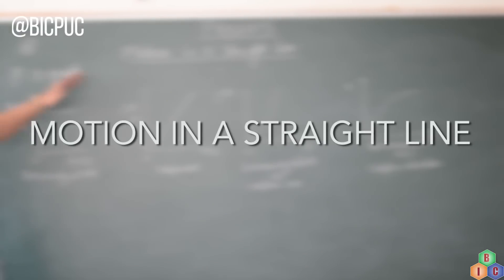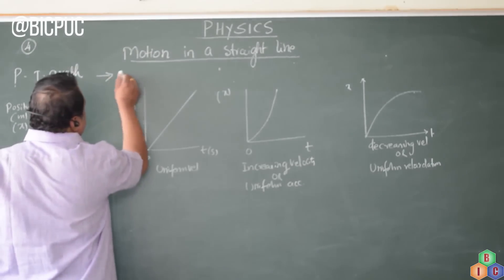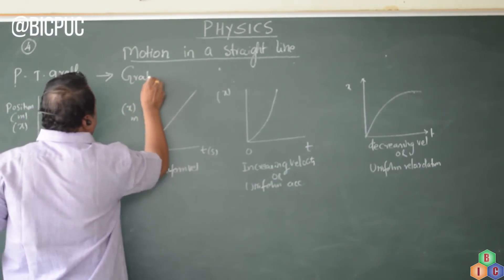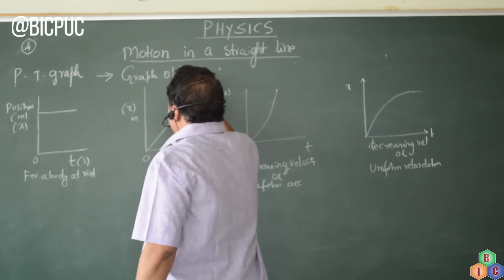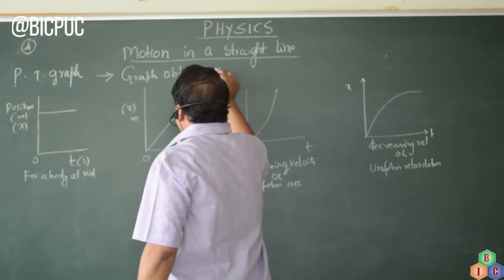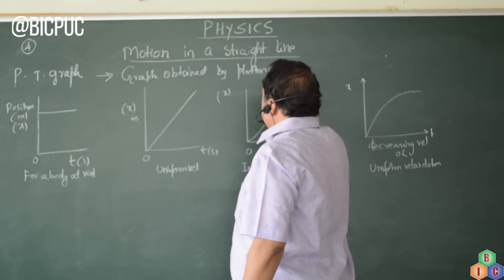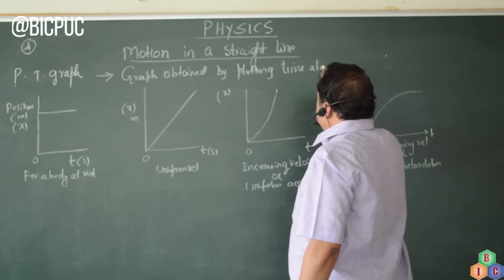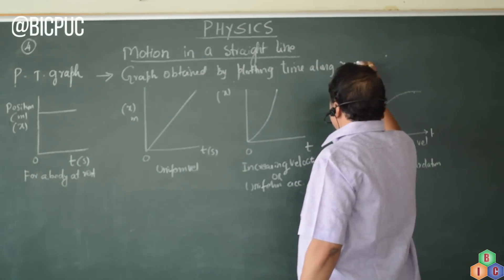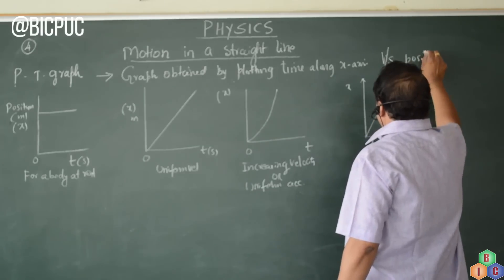The next topic in motion in a straight line is about the PT graph. A PT graph is a graph obtained by plotting time along the x-axis versus the position of the particle in motion.